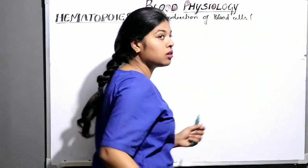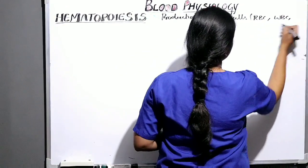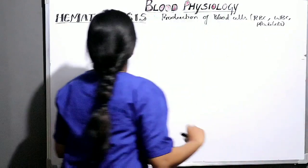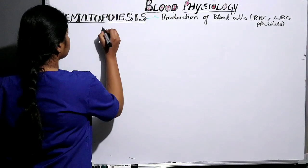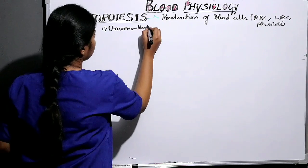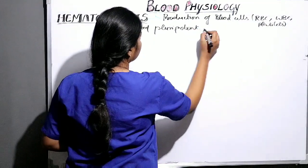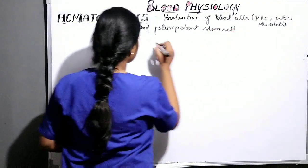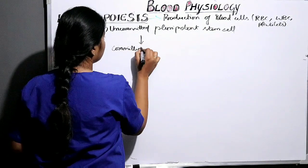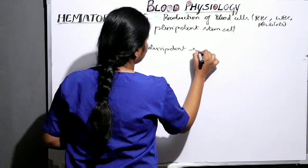So what are blood cells? Red blood cells, white blood cells, and platelets. So how does hematopoiesis occur? The first step: the uncommitted pluripotent stem cell is converted into a committed pluripotent stem cell.